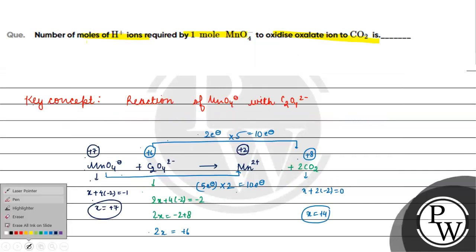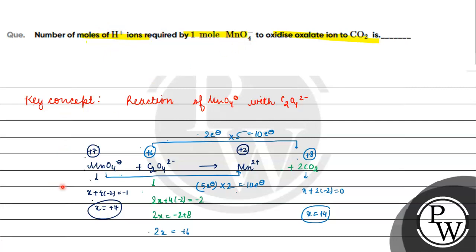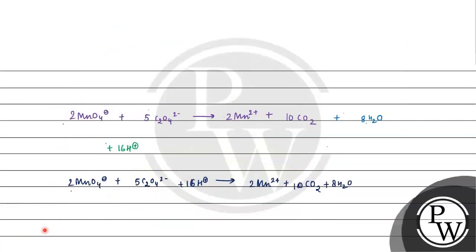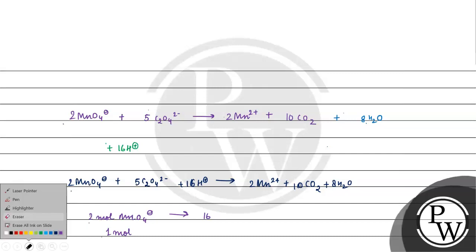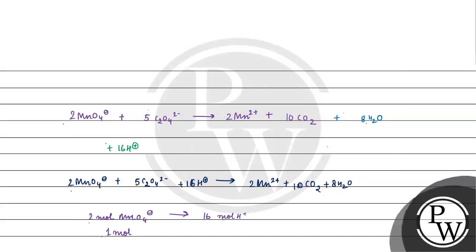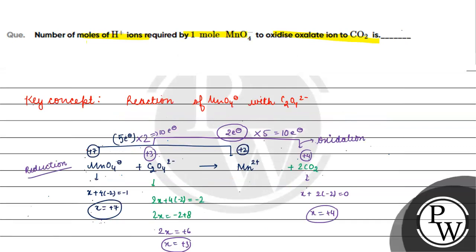Now we answer the question: how many moles of H⁺ are required by 1 mole of permanganate ion? From the balanced equation, 2 moles of permanganate require 16 moles of H⁺. Therefore, 1 mole of permanganate requires 8 moles of H⁺. The answer is 8.